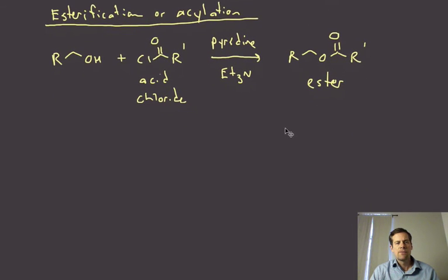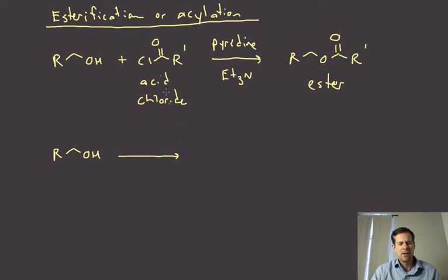Let me just follow up on this and say that there's other ways that we can do esterifications. One thing we can do is react with a different electrophile, but the acid chloride is the most reactive of these acylating agents. If we want to react with some of the others, we need to use the more reactive alkoxide. We can use one of our strong bases to convert the alcohol to the alkoxide.